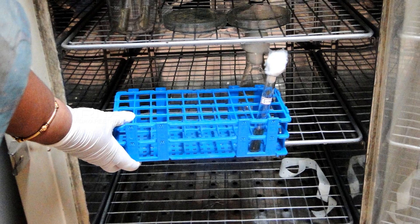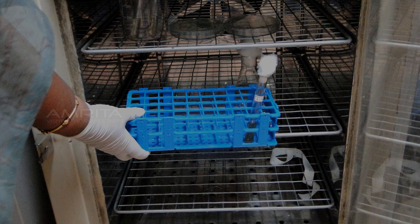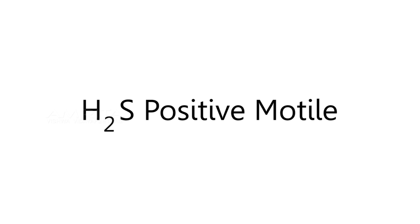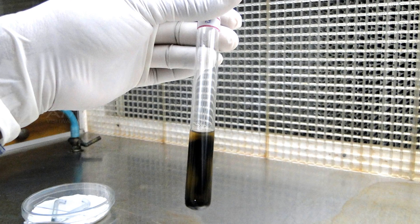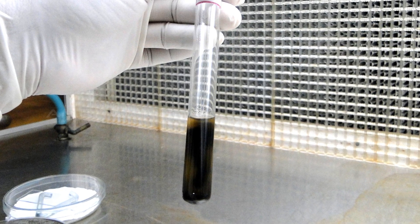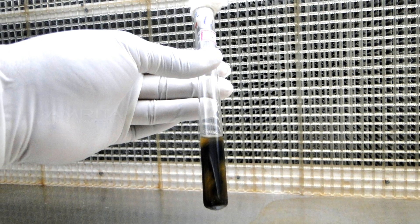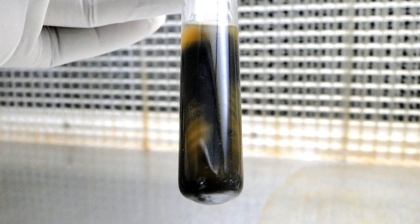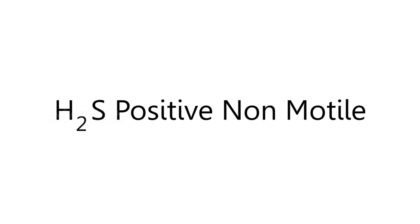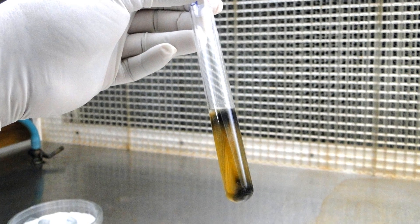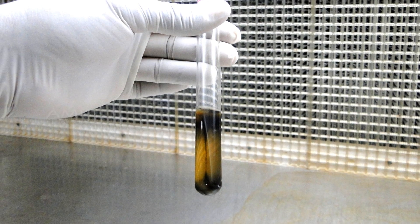After 24 hours, take out the tubes and observe the possible results. The result shows dispersed growth of the organism outward from the stab line, indicating that the organism is actively motile. Black coloration in the medium is indicative of sulphur reduction and hydrogen sulphide production by the organism.